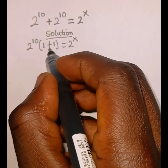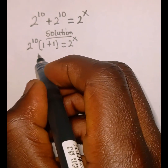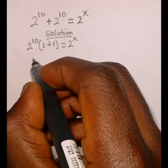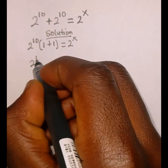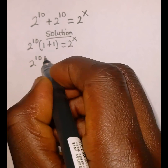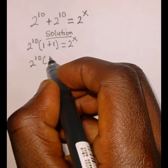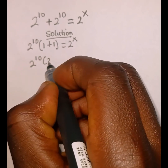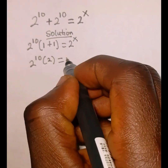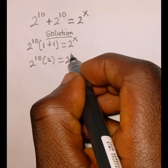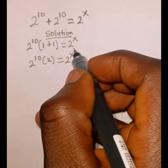The next thing we're going to do is to work on this bracket. So we're going to have 2 raised to the power of 10 into 1 plus 1, which is going to give us 2, so everything will be equal to 2 raised to the power of x.